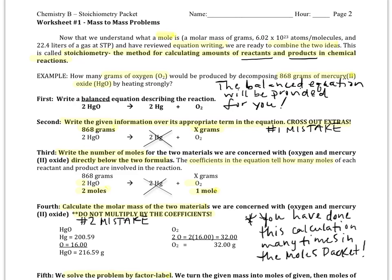So, let's look at an example. The example says how many grams of oxygen would be produced if we decompose or react 868 grams of mercury oxide. I want you to notice, this will be the case in all Worksheet 1 problems, that we are given information about the reactant in grams, and we are asked to find information about the product in grams.